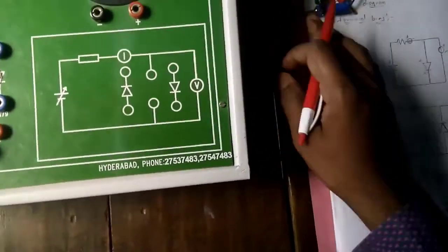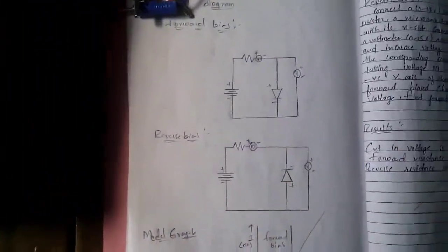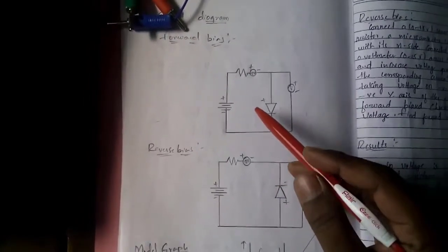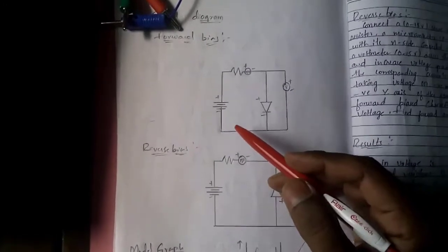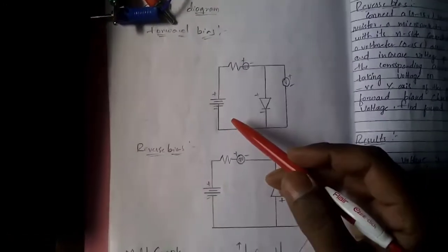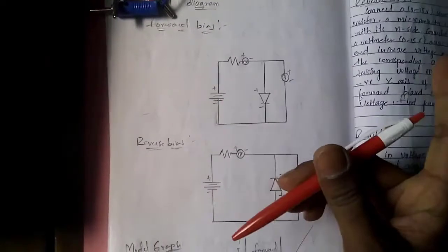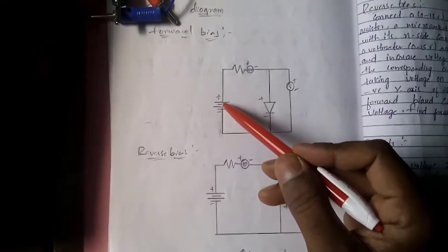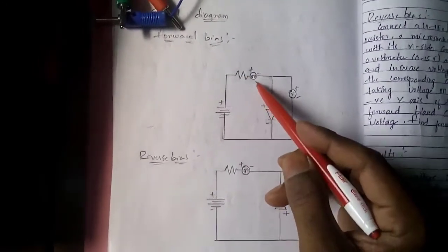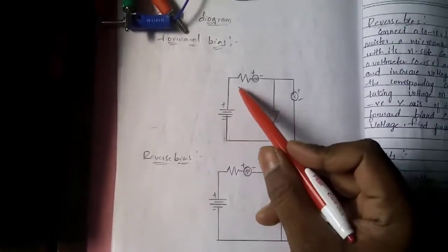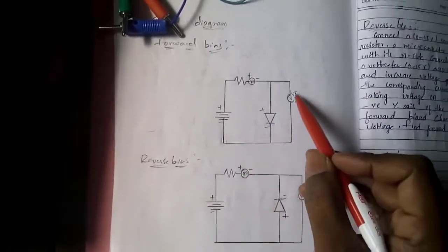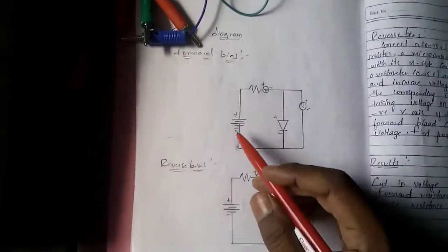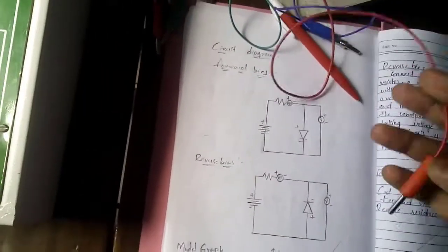I have taken different colors of patch cords — that's your choice. Now I am showing the forward bias and reverse bias circuit diagrams. We will start always with the power supply. The power supply connects to the resistance, resistance to the ammeter, ammeter to the diode, and diode back to the power supply — this connection is called a series connection. The voltmeter is always connected in parallel, meaning it is connected across the diode. Similarly for the reverse bias circuit also.